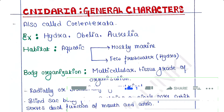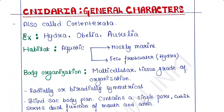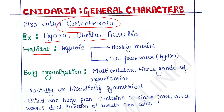Cnidaria are also called Coelenterata. Examples of Cnidaria are Hydra, Obelia, Aurelia, etc. Regarding habitat, they are aquatic animals — mostly marine, but some are freshwater species. For example, Hydra is the exceptional case; it is found in freshwater, whereas most others are marine.